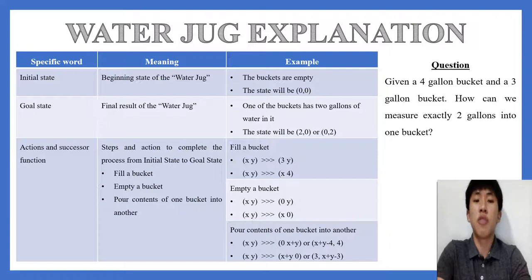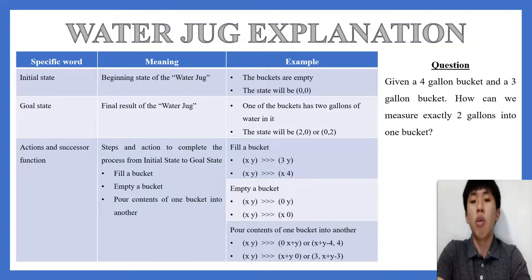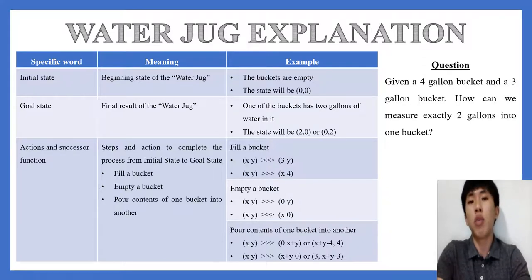For the Action and Successor function, the 3 methods are: fill a bucket, represented as x=3 or y=4; empty a bucket, represented as x=0 or y=0; or pour content from one bucket into another, which transfers the content from x to y or y to x.